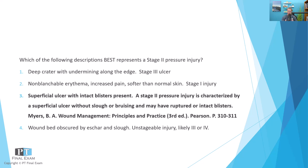Option two — non-blanchable erythema, increased pain, and softer than normal skin — would be a stage one pressure injury. The injury has not erupted into an ulcer yet, but those signs indicate some type of deeper injury. Finally, option four — a wound bed obscured by eschar or slough — would be classified as an unstageable injury, likely a three or four, but because the eschar prevents the clinician from viewing the depth of the wound, it is technically unstageable until they can visualize or measure the wound depth.